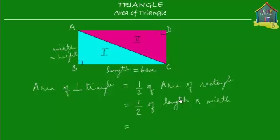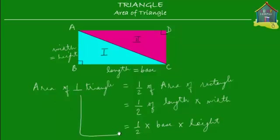In this formula, if you replace the length by the base and the width by the height, what do you get? Well, what you get is this: half of — and 'of' means multiplied by — half of base times height. And there you go, that's the formula to calculate the area of a right angle triangle. A right angle triangle's area is equal to half of its base times its height.